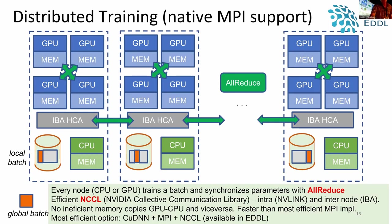With NCCL, communications handle both intra-node and inter-node, and it is optimized for NVLink, making it much better than MPI. You can also visualize the distributed implementation inside EDDL within GPUs.